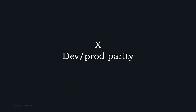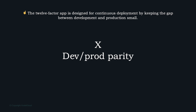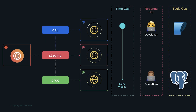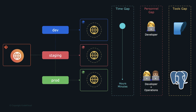The 10th principle addresses parity between environments. The 12-factor app is designed for continuous deployment by keeping the gap between development and production small. Developers should resist using different backing services across environments. With CI/CD tools, changes can go from dev to production in hours or even minutes. Developers should also be involved in deploying and monitoring the app in production, and tools should be kept as consistent as possible across environments.